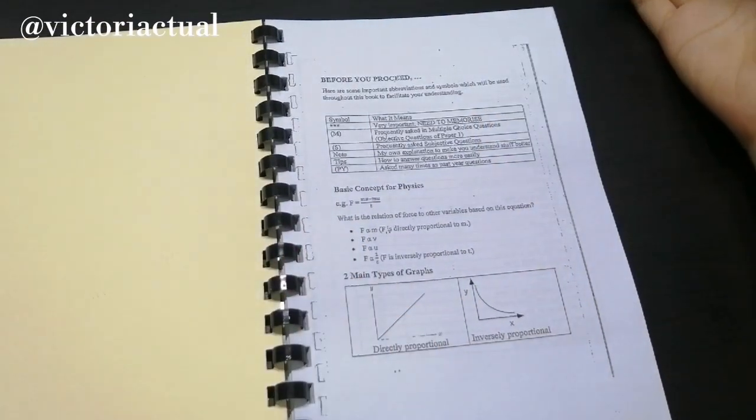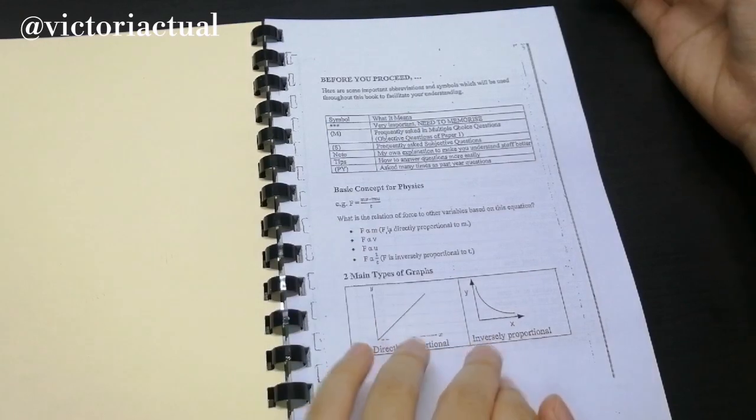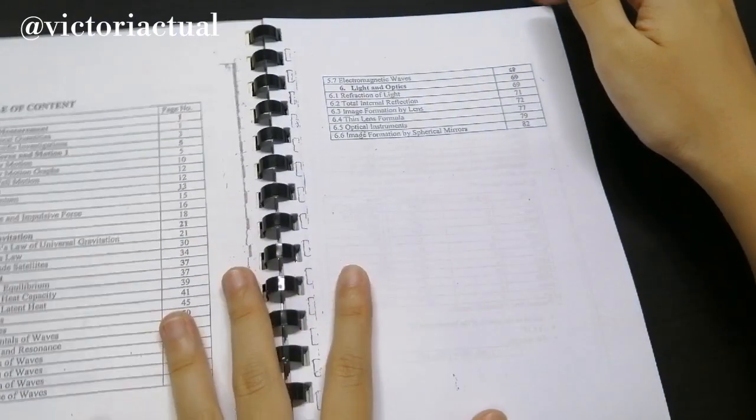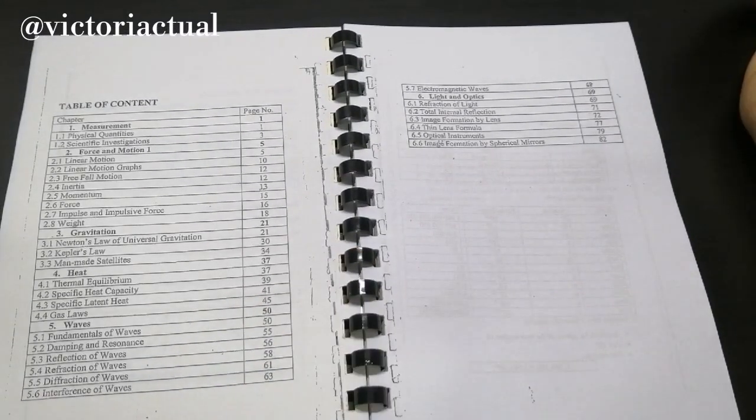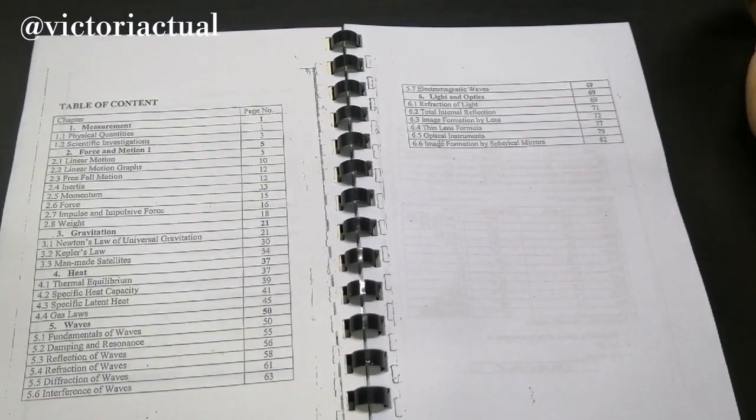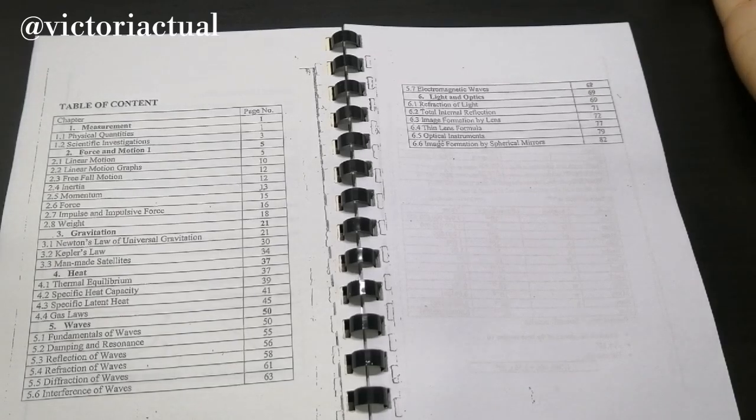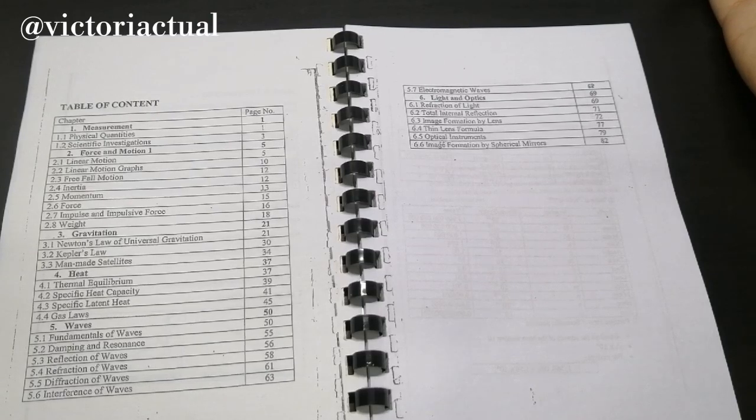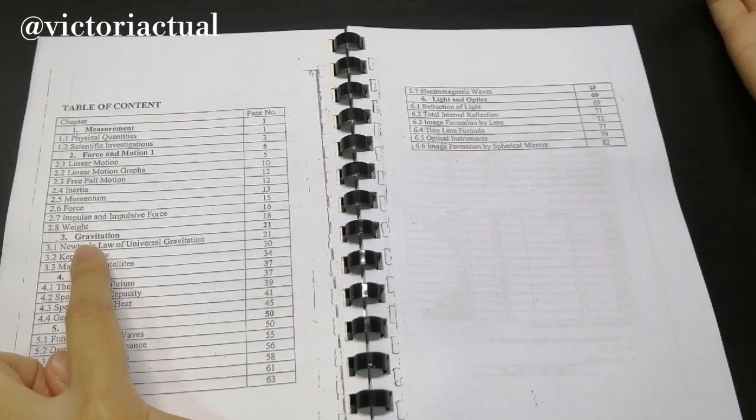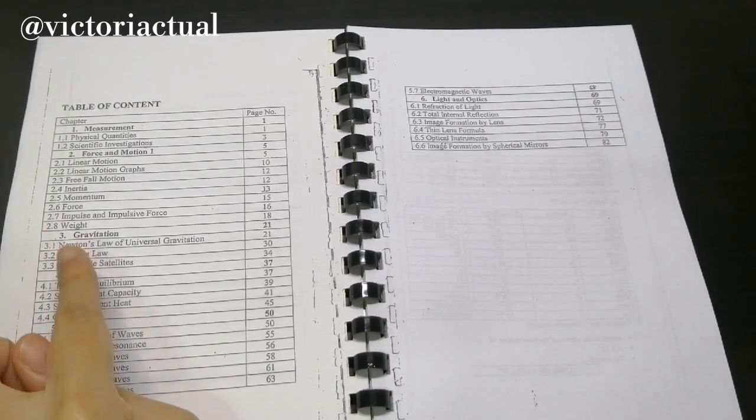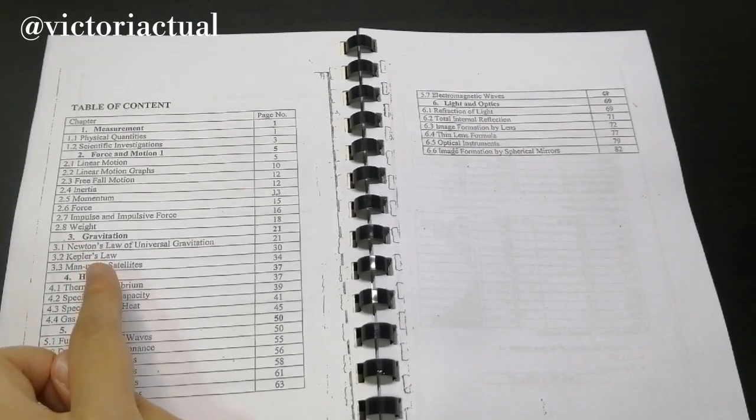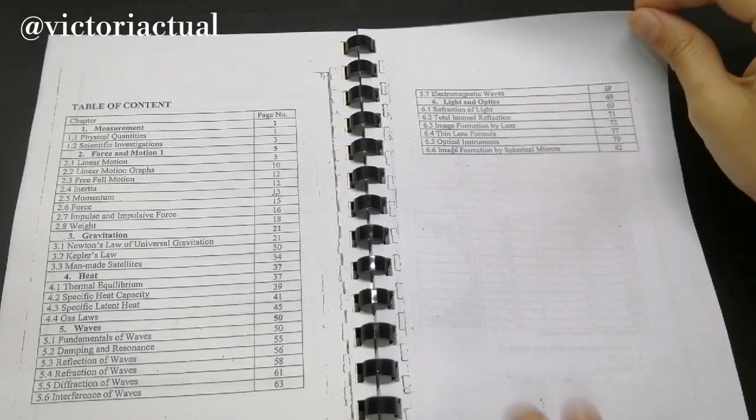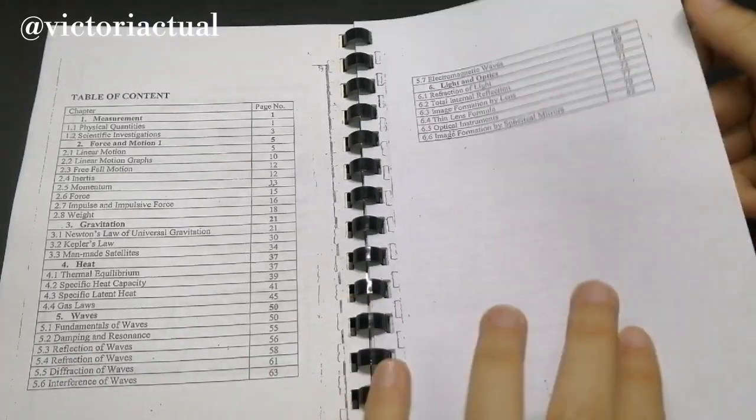So here is the first page, something to take note of before you proceed and I have the basic concepts of physics as well. And then we have the table of contents here. You guys actually have six topics in total. And how it is different from the current KBSM syllabus is they added gravitation, which I actually learned during foundation in science in uni. And also waves used to be Form 5 but they moved it to Form 4. So that's mainly the difference.